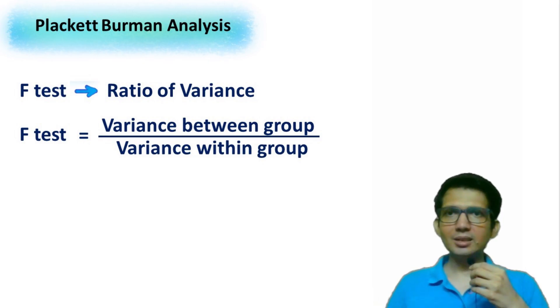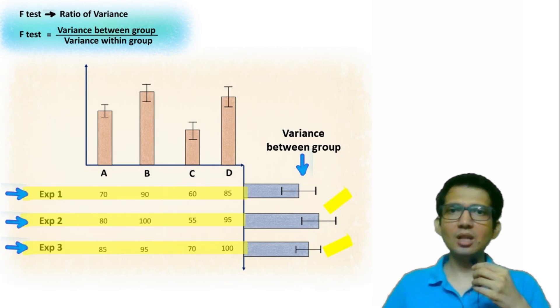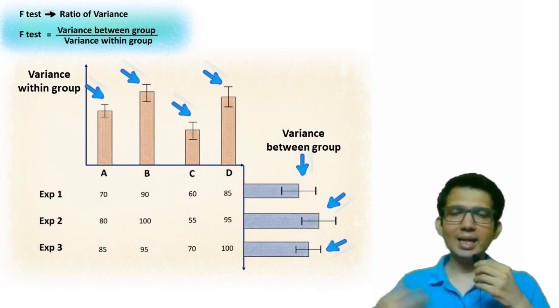As discussed in the previous video of ANOVA, the variance between group is the variance across the variables under study, while the variance within group is the experimental error.